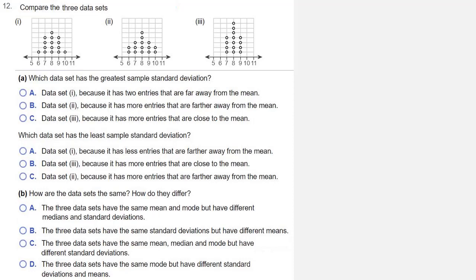Which data set has the greatest sample standard deviation? Which set has the least sample standard deviation? And how are the data sets the same? How do they differ?